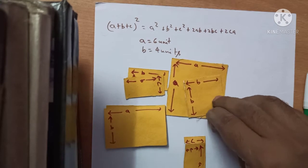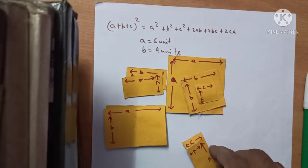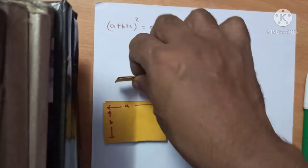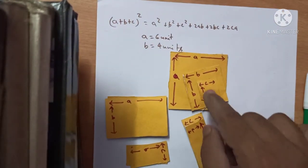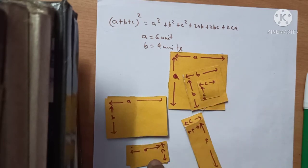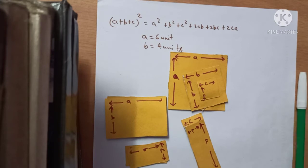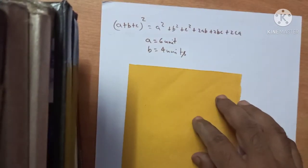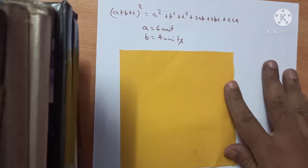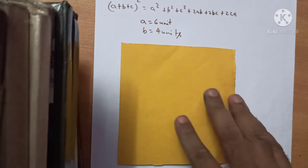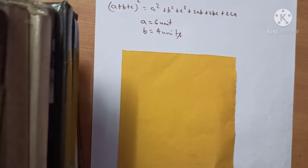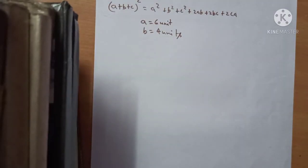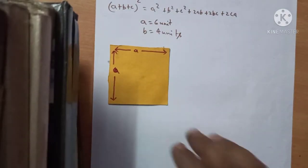So we are going to prove that a square plus b square plus c square plus 2ab plus 2bc plus 2ac is equal to a plus b plus c whole square. Let's see how. I am going to arrange these pieces now on a sheet.